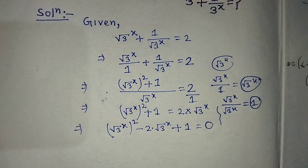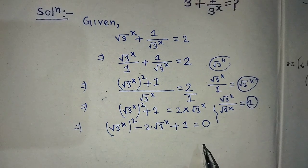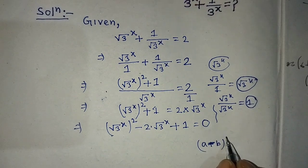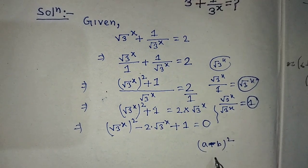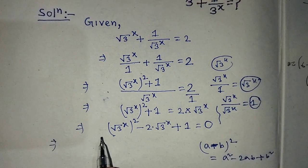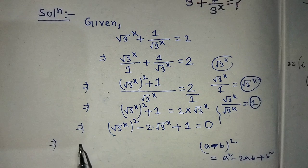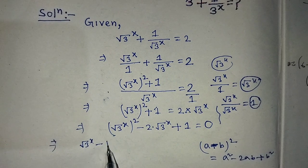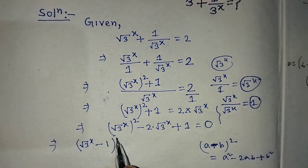Now we apply the formula: a minus b, whole to the power 2, equals a squared minus 2ab plus b squared. Using this on the left hand side of the equation, we can write: root over of 3 whole to the power x, minus 1, whole to the power 2, is equal to 0.